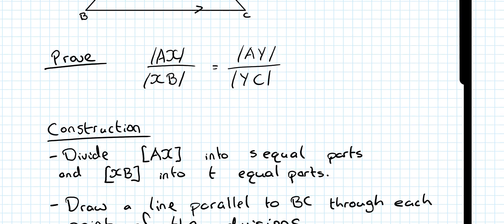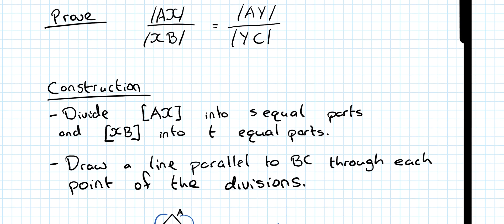So, the construction then. We divide the line AX into S equal parts. Now, S is a generic term. It could be any ratio, any number we want, but we choose the general number S. And the section XB into T equal parts. Draw a line parallel to BC through each of the points.